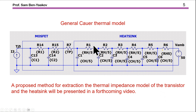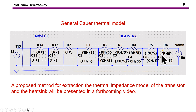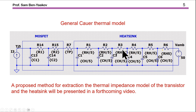Here I'm showing a generic Cauer-ladder-type thermal model of the system, composed of three parts: the MOSFET, the thermal pad, and the heatsink. The model includes the total capacitance, the resistance within the aluminum itself, and the thermal resistance between the heatsink and air — which represents the heat transfer between the heatsink and the ambient.